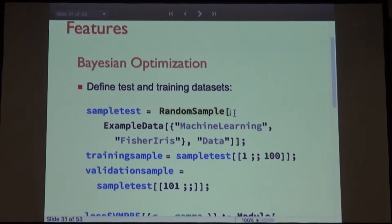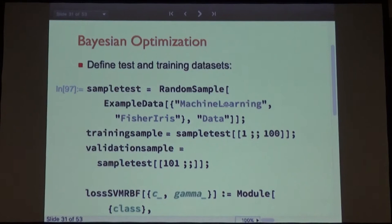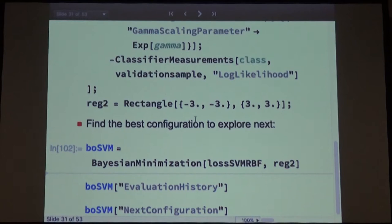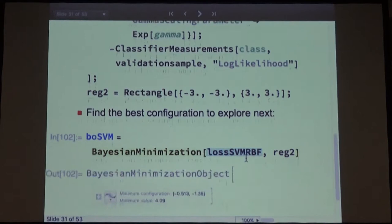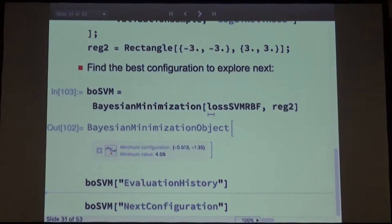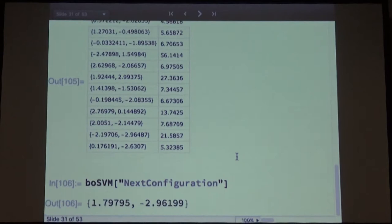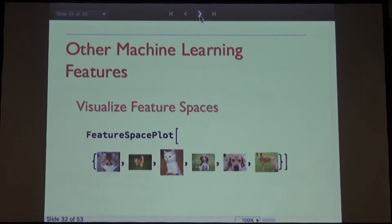Also interesting for the neural network framework: we have a full Bayesian optimization package for hyperparameter searches. You define some search space, then say minimize given the search space and loss function, and see the history of evaluations. At every step it needs to choose what the next best thing to try is. For visualization, there are utility functions like t-SNE — all built into the system.